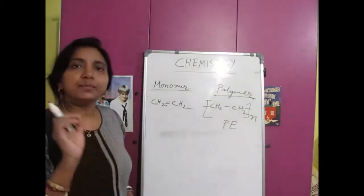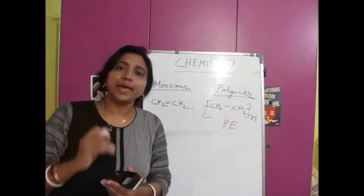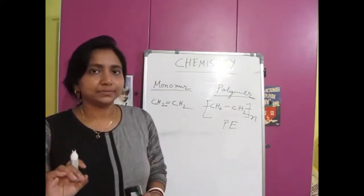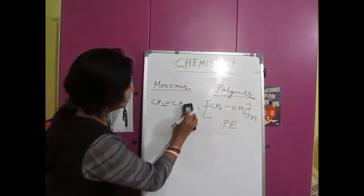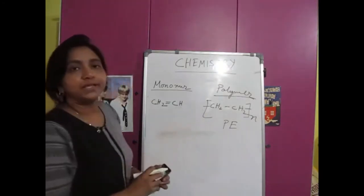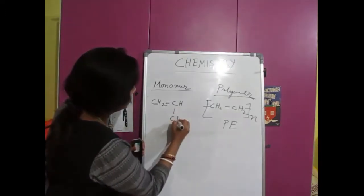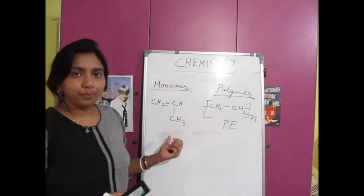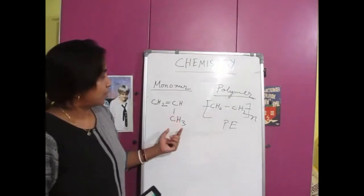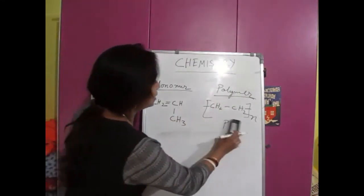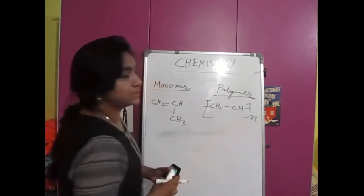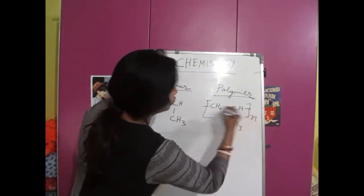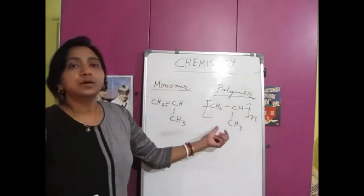The next is polypropylene. To make the polypropylene, first we have to know the structure of propylene. Replace one hydrogen and write a methyl group — that is the structure of propylene. Now the same thing: remove the double bond and give here one methyl group. That is the polypropylene.